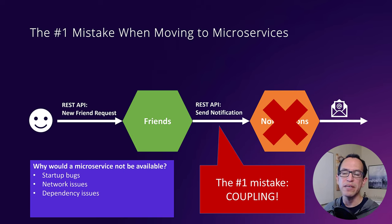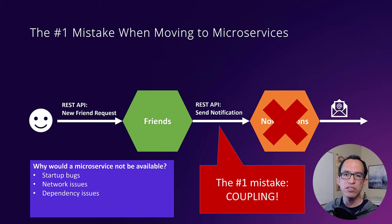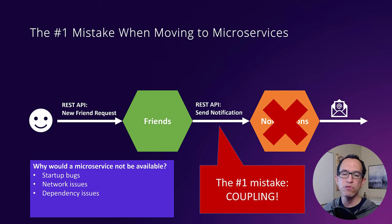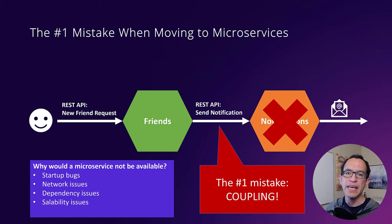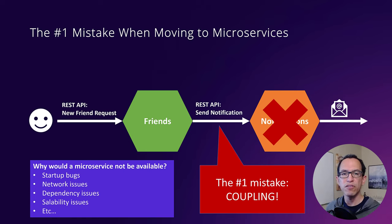Another issue could be dependency issues. What if the notification microservice has a dependency, let's say on a database service, and that database service for some reason is just overwhelmed with requests? So it starts throttling the notification microservice. At that point, notifications is just going to slow down completely, and it's going to prevent the friends microservice from being able to actually get any results from it. We can also have scalability issues — notifications microservice being bombarded with a lot of requests from not just this microservice but many other microservices. At that point it just can't reply on time, and sometimes cannot reply at all. There could be multiple issues that could cause the notification microservice from not being able to work properly.